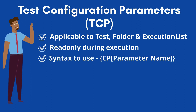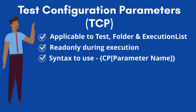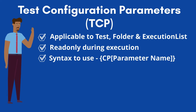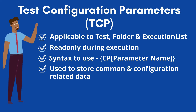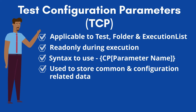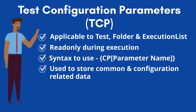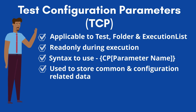The syntax to read a TCP parameter is {cp parameter name}. The TCPs are visible in the test configuration section of every test case, folder, or execution list. Ideally, we should use the test configuration parameters for common or configuration-related data which are applicable throughout the test suites. Examples of TCPs are application path or URL, credentials, environment details, reporting path, etc.